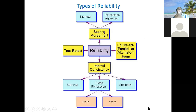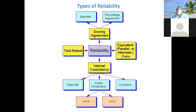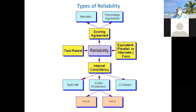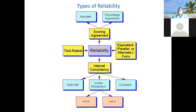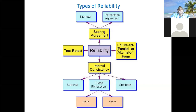For example with parallel form, consider NECO and WAEC — West African and National examinations. If they claim it's the same syllabus and the same standard, you may want to see if the questions and examinations are consistent. If someone passed with distinction in NECO, would they have a similar result in WAEC if they sat for it? Those are parallel forms — doing the same thing, but they are different instruments. We also call this equivalent form reliability.